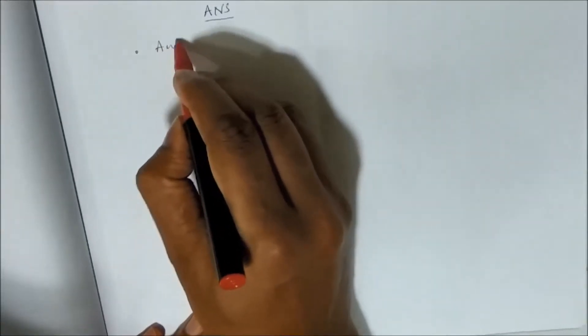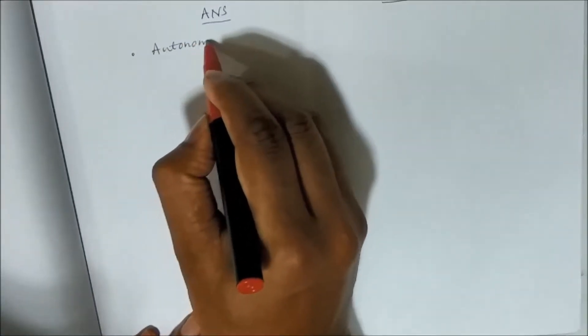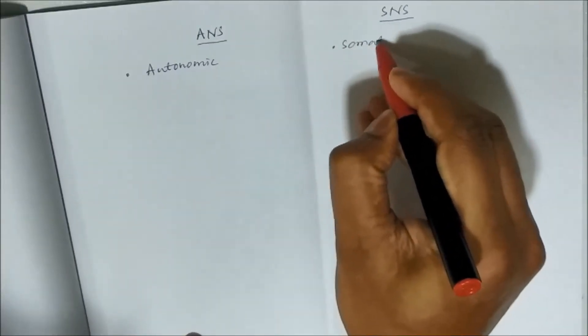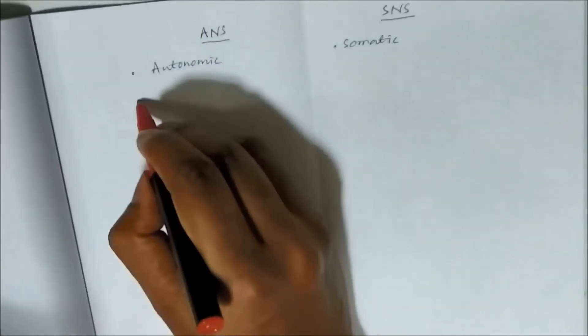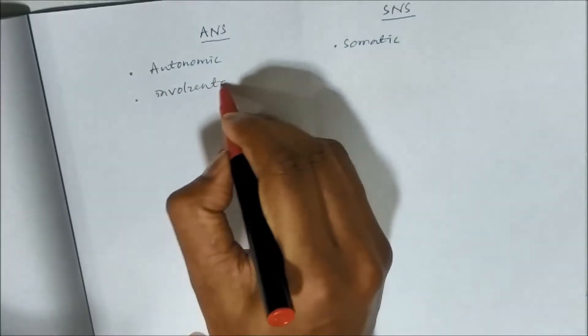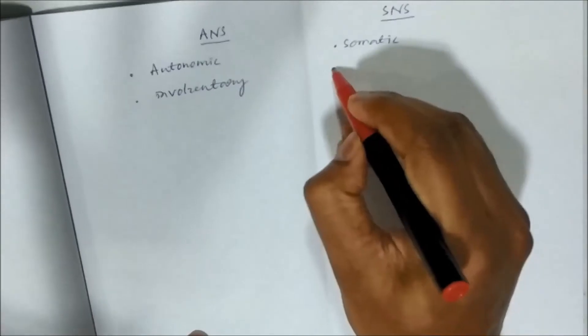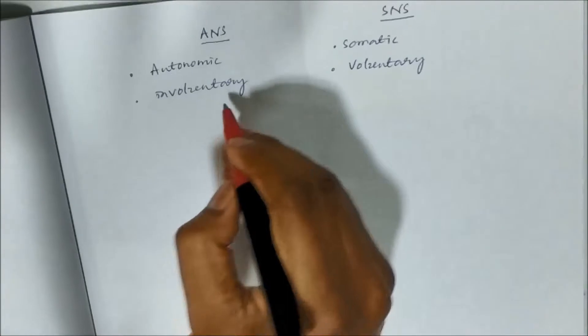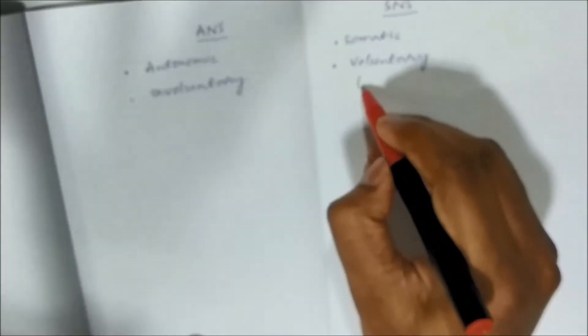So ANS, when we say, this is autonomic and this is somatic. Why they are called autonomic or somatic? Because this is involuntary whereas this is voluntary. So what do you mean by this involuntary and voluntary? Voluntary means under conscious control.